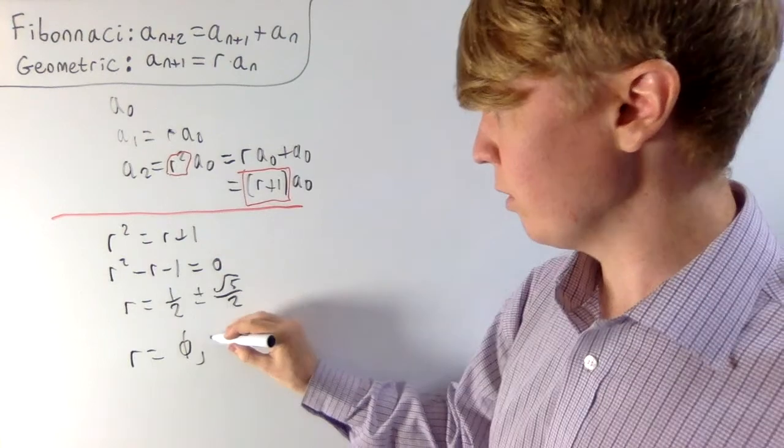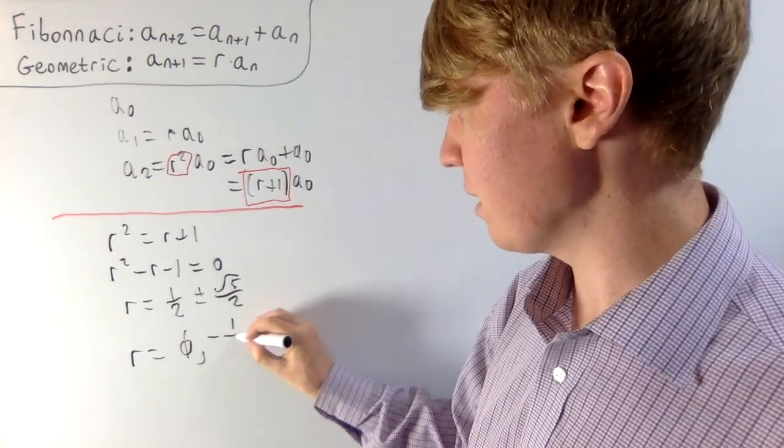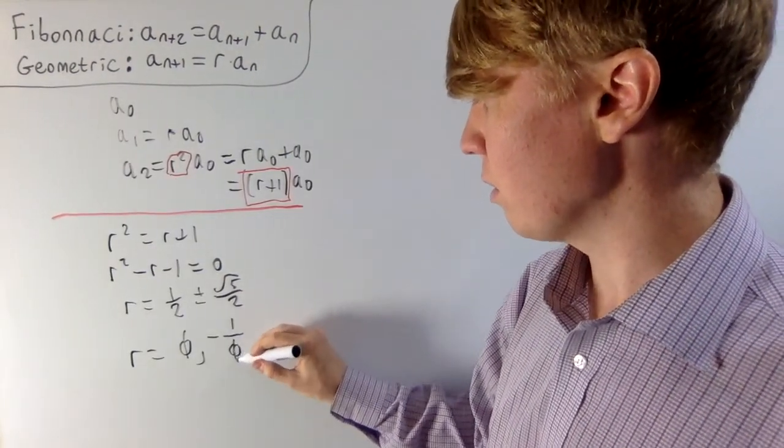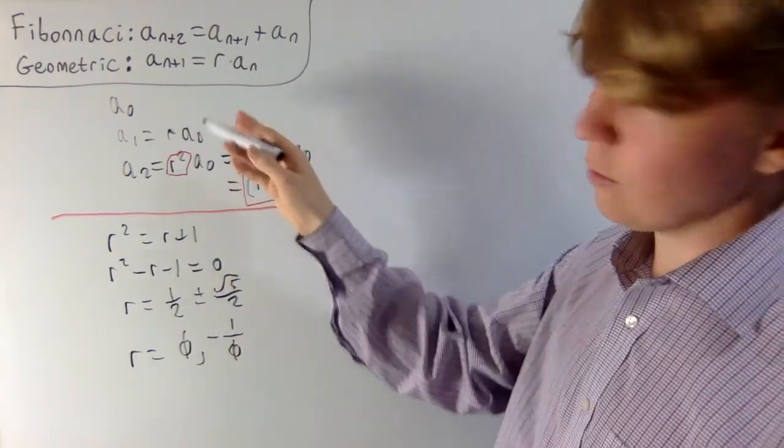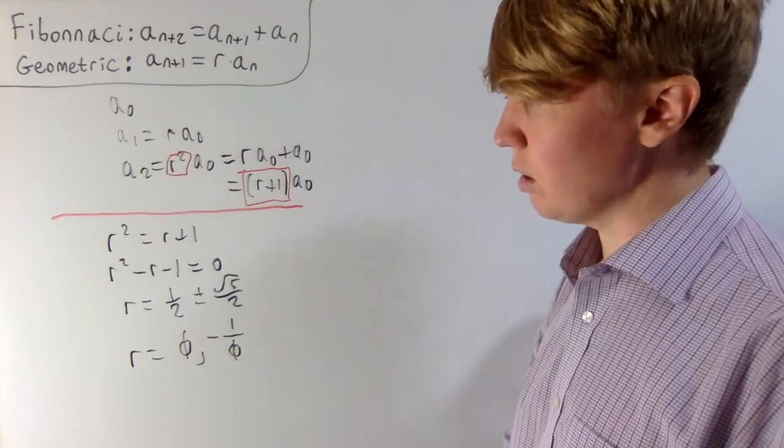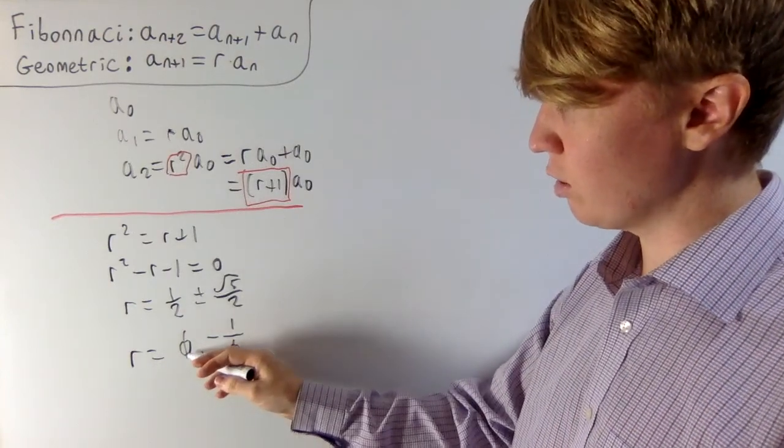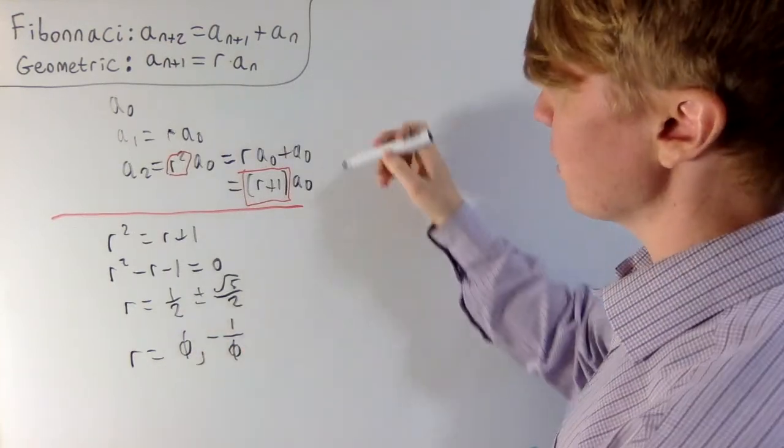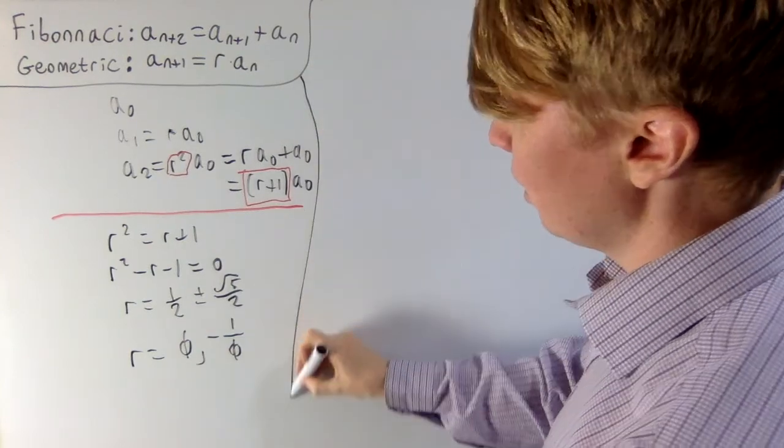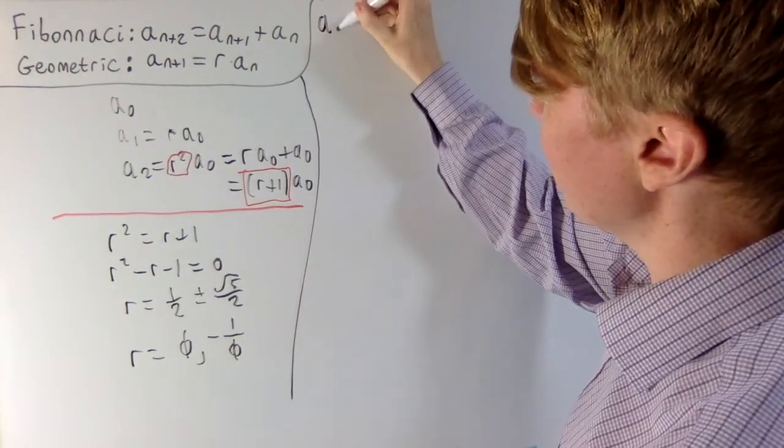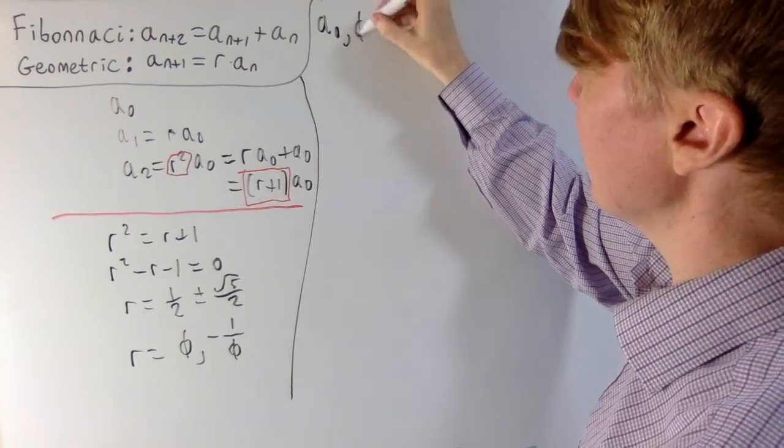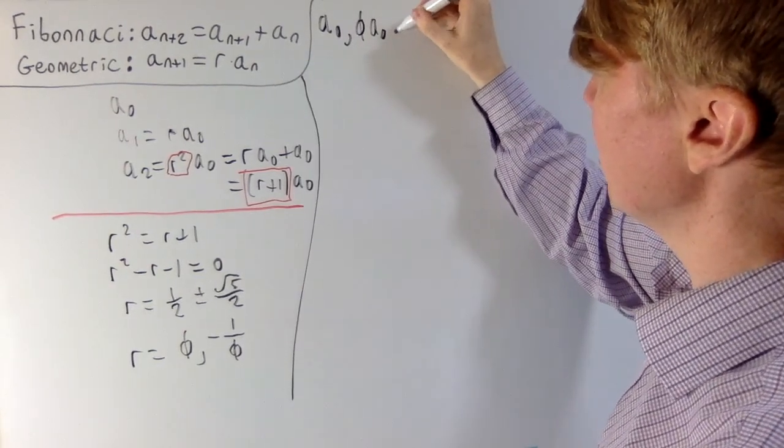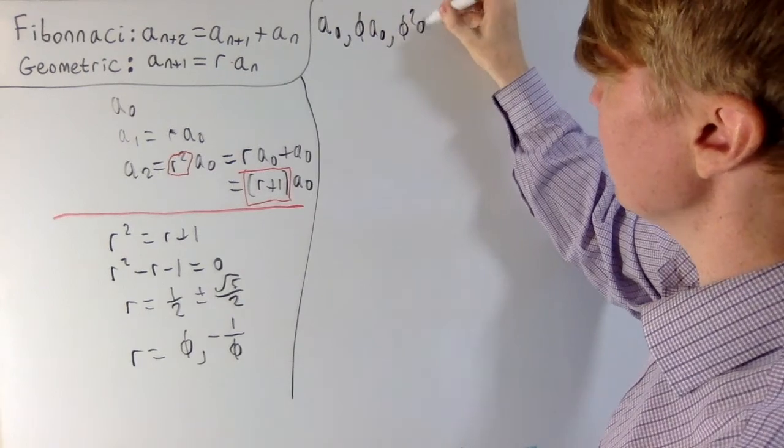And the negative solution is the negative reciprocal. You can show this by rationalizing the denominator here, if you like. So in order to have a Fibonacci and geometric sequence, it seems we need to have our common ratio is either phi or its negative reciprocal. So let's have a look, just our first example. We say we start with any non-zero a0, then our next term is phi a0, phi squared a0, and so on.